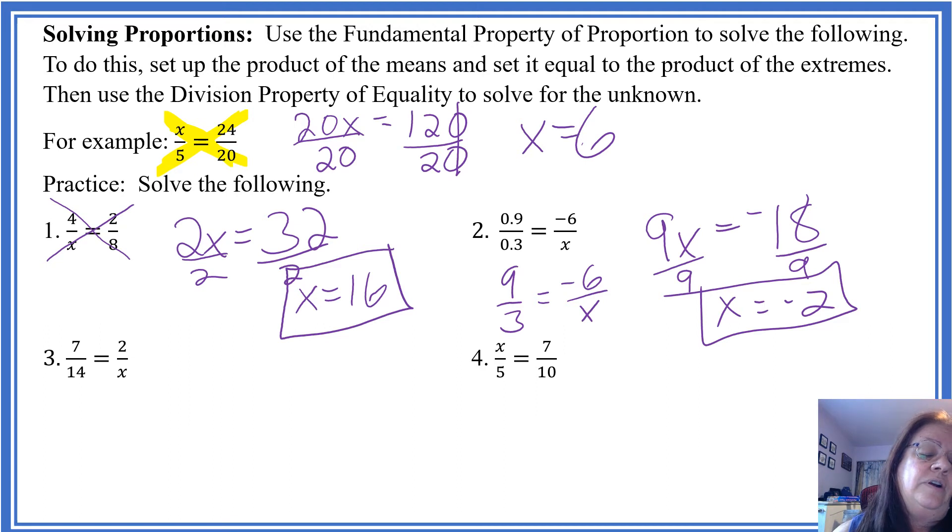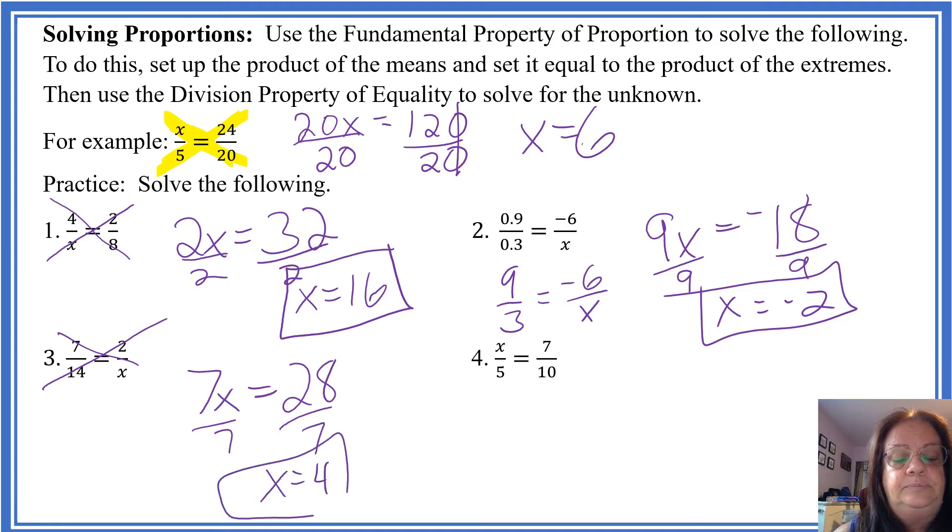Over here on number 3. 7x equals 28. We divide both sides by 7, x equals 4. That's nice. Now we have 10x equals 35. Divide by 10. x equals... Well, there are 7 fives in 35 and 2 in 10.